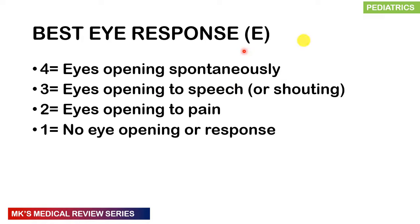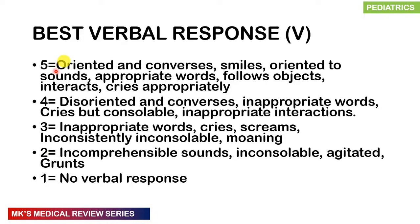Verbal response is scored out of 5. Score 5 if they are oriented and conversing, or if they smile, are oriented to sounds, say appropriate words, follow objects, interact with the environment, or cry appropriately. Score 4 if disoriented and conversing, giving inappropriate words, crying but consolable, or showing inappropriate interactions. Score 3 for inappropriate words, cries, screams, inconsistently inconsolable crying, or moaning. Score 2 for incomprehensible sounds, inconsolable crying, agitation, or grunting. Score 1 if there is no verbal response.